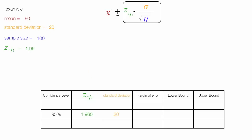The first thing I'm going to do is calculate the margin of error. It's 1.96 times the standard deviation, which is 20, divided by the sample size, which is 100. This equals 1.96 times 20 divided by 10 — that's the square root of 100 — which equals 1.96 times 2, and this equals 3.92.